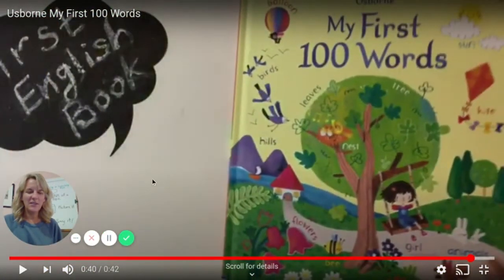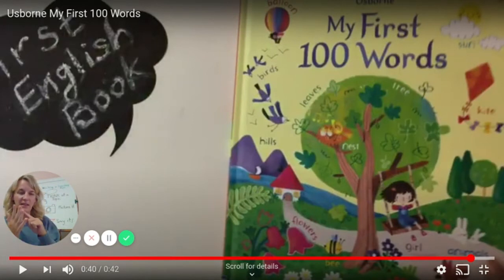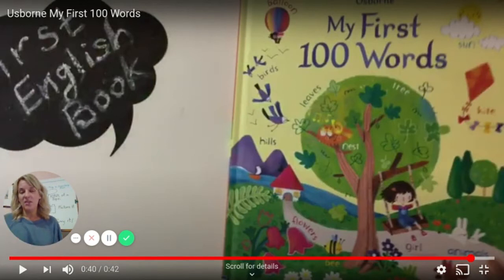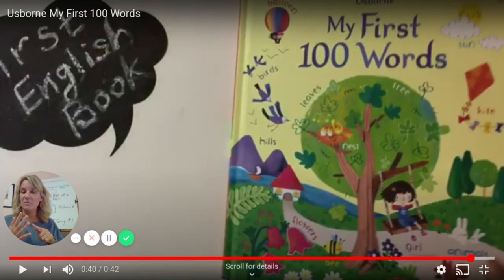So boys and girls, those were all different types of things on the pages and you're going to pick one theme and then each page is going to be a different picture that could be part of that theme. So let's say if you want to pick animals in the zoo, you could do one page a zebra, one page a lion, one page a monkey, one page an eagle, one page a snake.